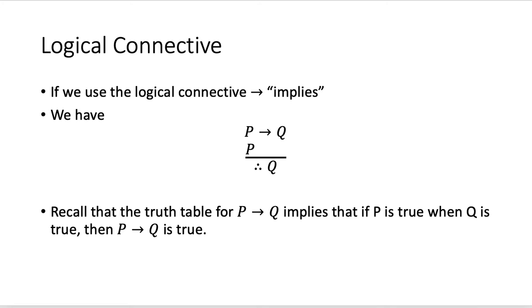If we use the logical connective for implies, the arrow, we have P implies Q, P, therefore Q.